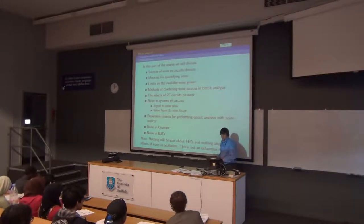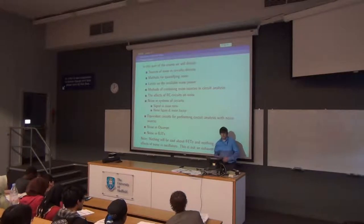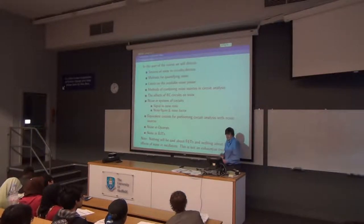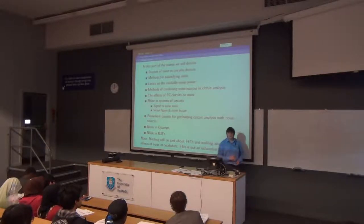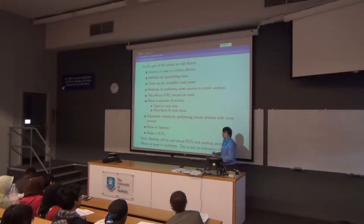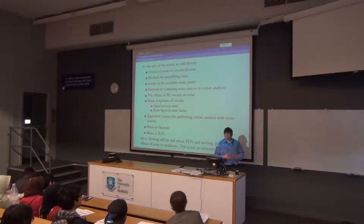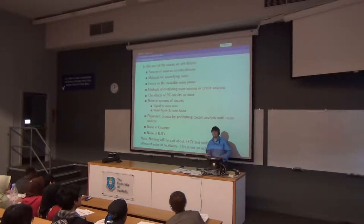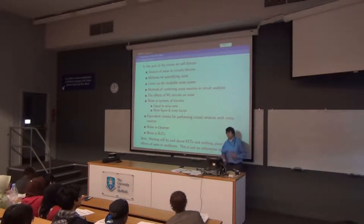So what will we actually talk about in these three or four lectures? Some sources of noise and how we actually decide how much noise there is — it's not as straightforward as just measuring voltages. We'll ask some questions about how much noise power is actually available, and think about how we might combine noise sources, because there's almost always more than one source of noise in a circuit. Every time you add a component you put another source in, possibly two. We'll then look at an RC circuit, and start talking about signal-to-noise ratio, and towards the end we'll look at some op-amps. I might put BJTs in, might not — depends how long all this takes us.